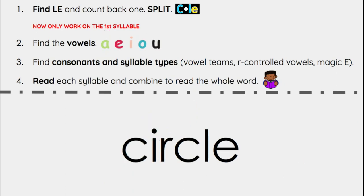Let's do our next word. We start off again just the same as before: find L-E and count back one, then split it. Remember, if the next letter back happens to be a vowel, this is not a consonant L-E word — it's most likely a magic E word. So you've got to make sure that next letter is a consonant. Now looking at the first syllable only, we find the vowel — there's an I right here. Then we find consonants after the vowel and any syllable types. I immediately notice there's an R right after the vowel, so this is an R-controlled vowel. The I-R says 'er.' So it goes 'cir' — 'cle' — circle.